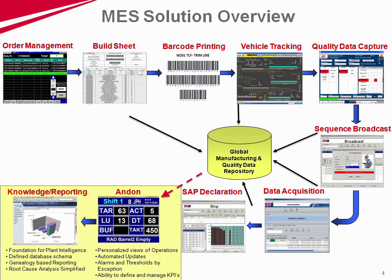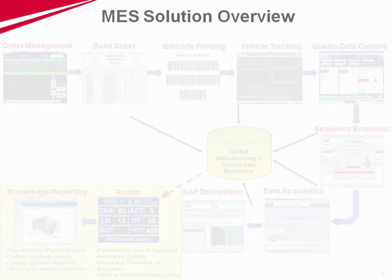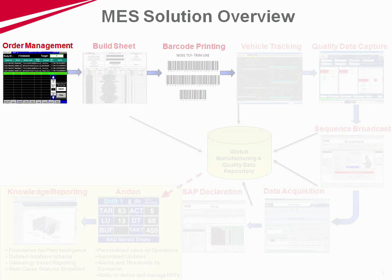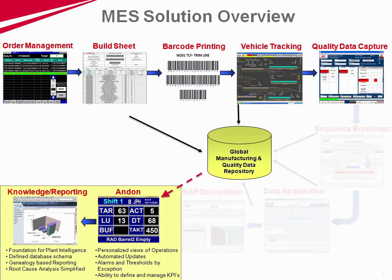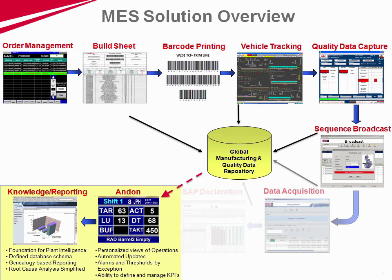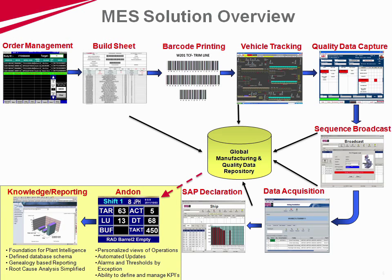Now you can see the complete process flow of the functionality outlined previously. For the accepted orders, build sheets are printed with the required data, orders are tracked, displayed and stored centrally in real-time. Essentially, new orders are started, tracked, displayed, broadcast, accounted and stored prior to dispatch from MVML.